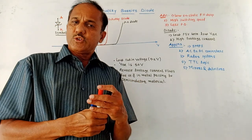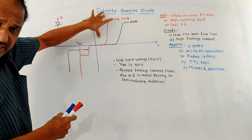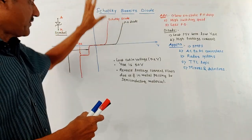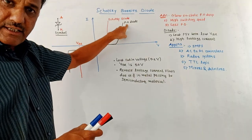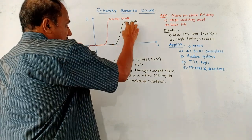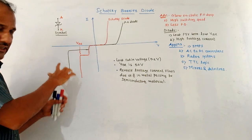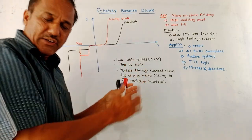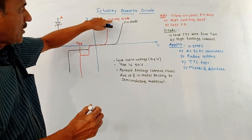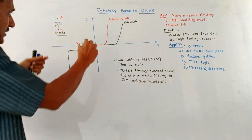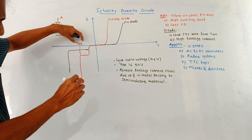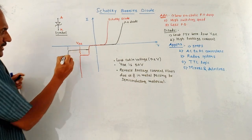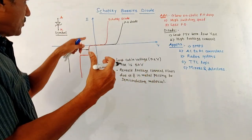Next is the current versus voltage characteristics of the Schottky Barrier Diode. I have drawn the IV characteristics of both the normal PN Junction Diode and the Schottky Diode on the same graph. The black color indicates the IV characteristics for the normal PN Junction Diode, with forward bias on one side and reverse bias on the other. The nature of the graph of the Schottky Barrier Diode remains the same as the normal PN Junction Diode, with only slight differences. The breakdown voltage of the Schottky Barrier Diode is less compared to that of the normal PN Junction Diode.